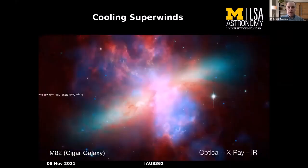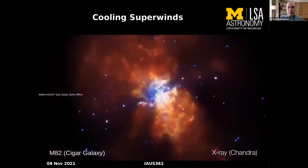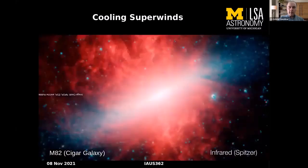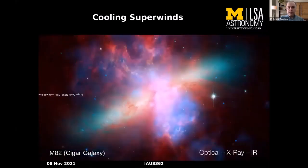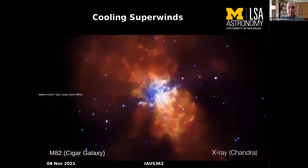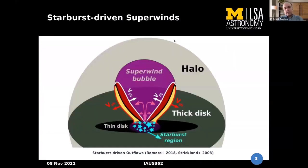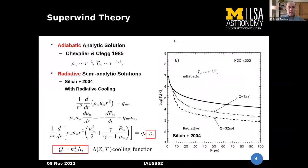In X-ray we see the presence of hot superwind regions with temperatures of around 10^7 K, and infrared images show regions with dusty material around 100,000 Kelvin. In the optical we see warm regions around 10,000 Kelvin. Here you see a schematic view of starburst regions, where the typical assumption for superwinds is adiabatic solutions.